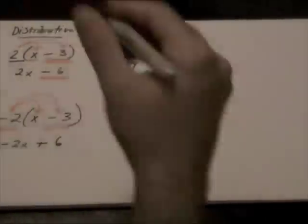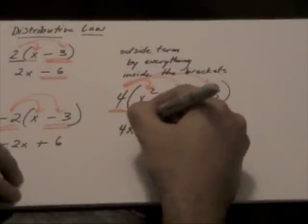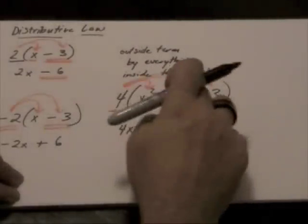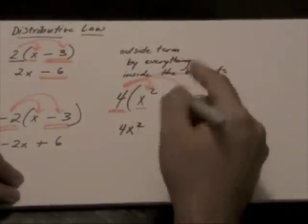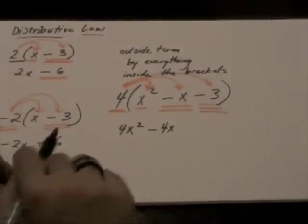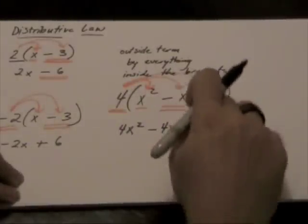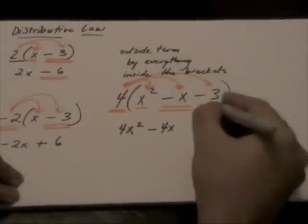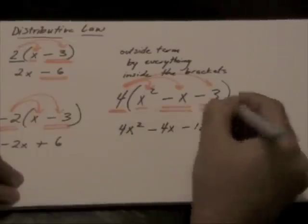It is going to be multiplied by negative x and it is going to be multiplied by negative 3. So this 4 times x squared will give me 4x squared. This 4 times negative x will give me negative 4x, and this 4 times negative 3 will give me negative 12.